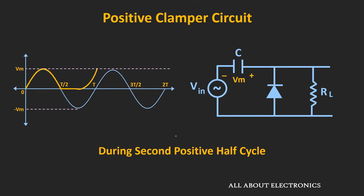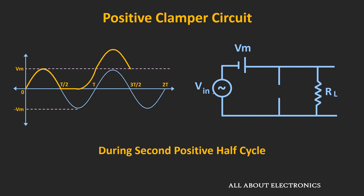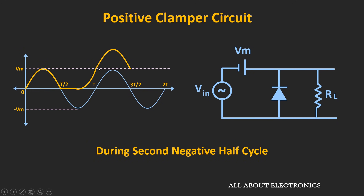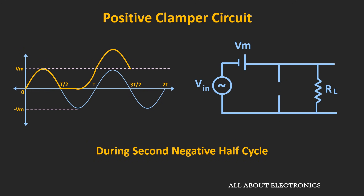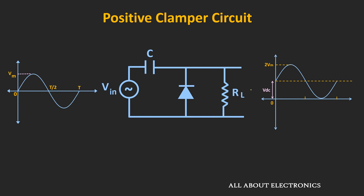During the next positive half cycle, this diode will still remain reverse biased, because the voltage across the diode is equal to Vin plus Vm, and as Vin is greater than zero, the voltage at the cathode is more than the anode. During the positive half cycle, the output voltage Vout can be given as Vin plus Vm, so you will get this type of waveform. During the next negative half cycle also, this diode will still remain reverse biased, and you will get this type of waveform. So in a steady state condition, the output waveform will look like this — meaning the entire waveform will get shifted upwards by Vm volts.